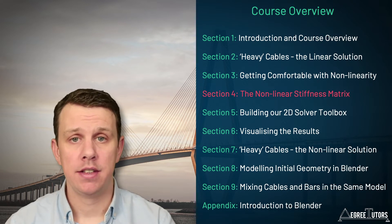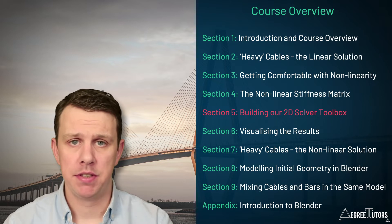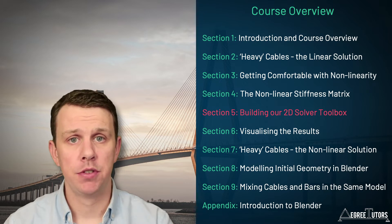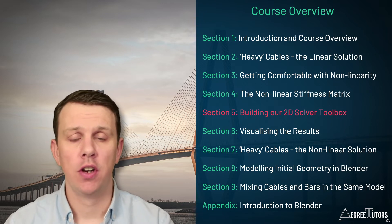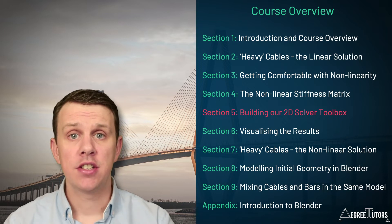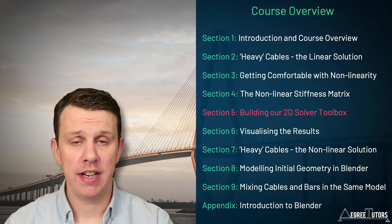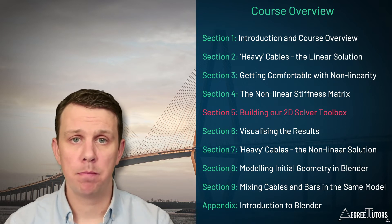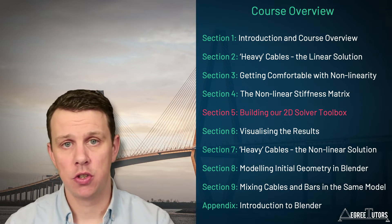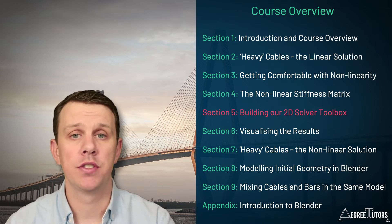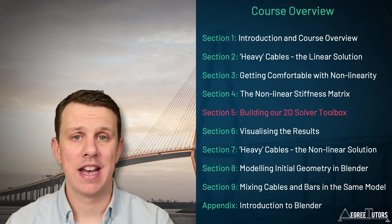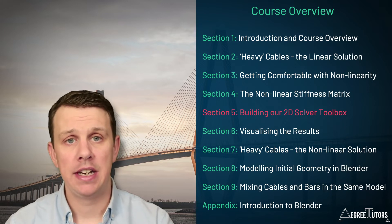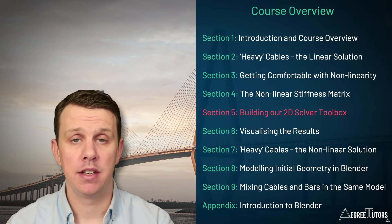In section four we'll be modifying the more familiar linear element stiffness matrix to capture the influence of large amplitude deflections. Some familiarity with the prerequisite material — in particular the stiffness matrix for linear bar elements — is going to be quite helpful in this section. Now that we have a non-linear element stiffness matrix and an understanding of how we might construct an algorithm to iterate towards a solution, in section five we're going to do the bulk of our code development. We're going to bring everything together and build out our solver in Python, breaking things up into bite-sized chunks. Life will be a lot easier in section five if you have some familiarity with the linear 2D truss solver built in the prerequisite course.